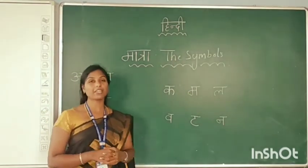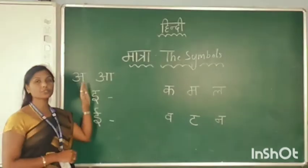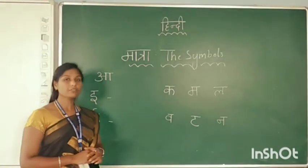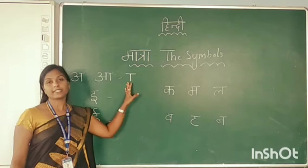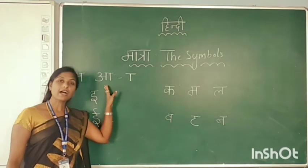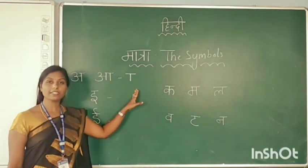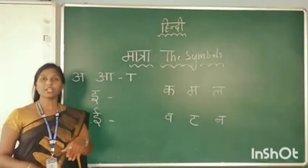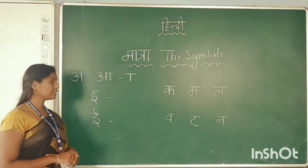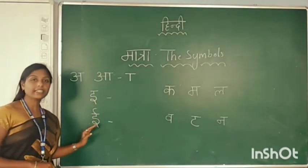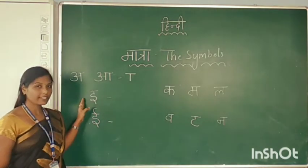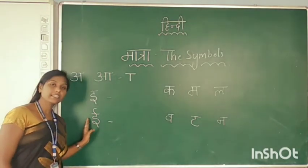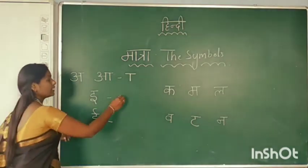In the previous class we completed the first two letters — the first two vowels, that is A and AA. The symbol of A looks like a T. So in this class we are going to learn the next two letters, that is E and EE. The sound of E is a short sound and EE is a long sound.